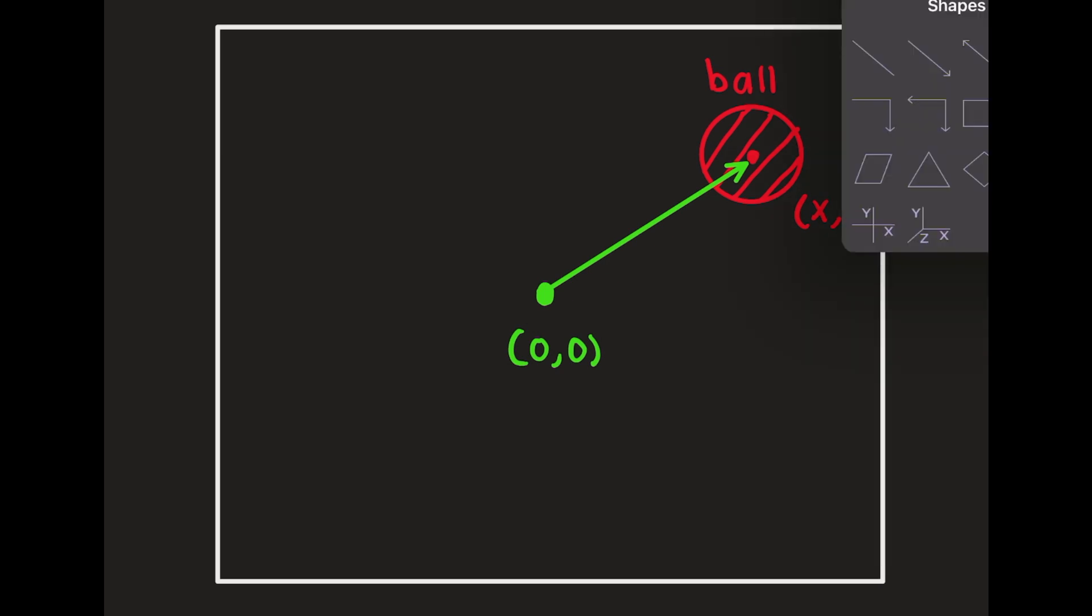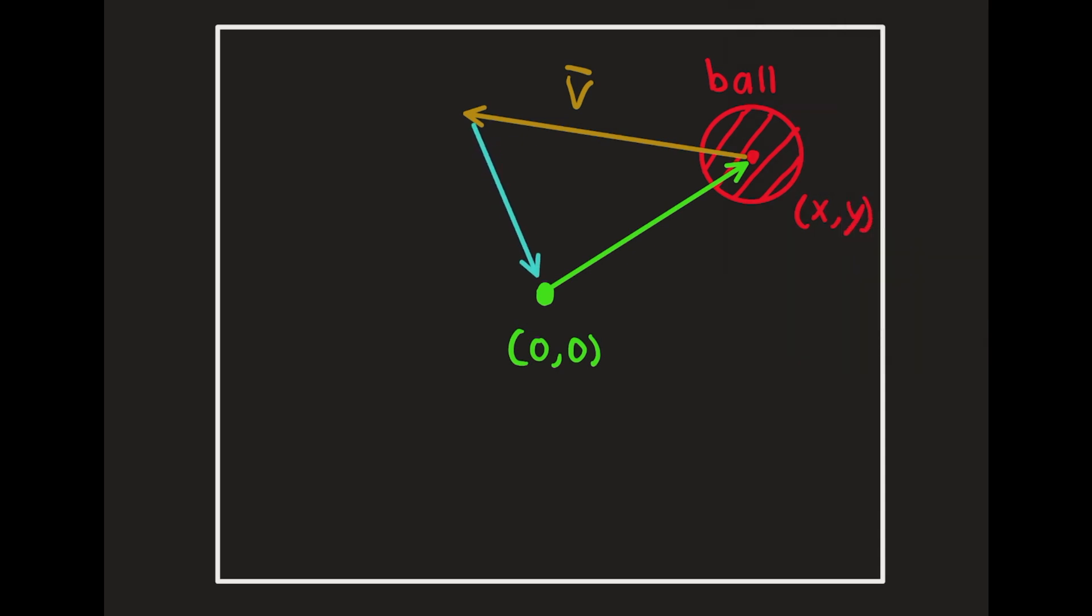Let's also imagine that at this point the ball is traveling with a velocity towards the left. We can draw a vector showing this velocity. In order to move the ball towards the center and to decrease its velocity, we must both take into account the position of the ball and the velocity of the ball.